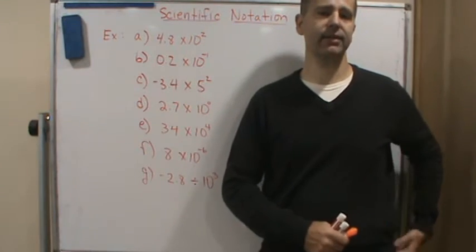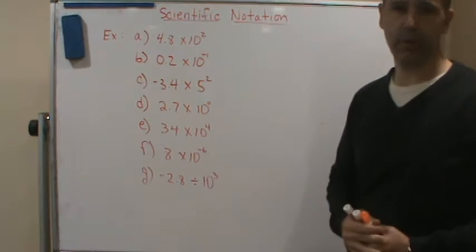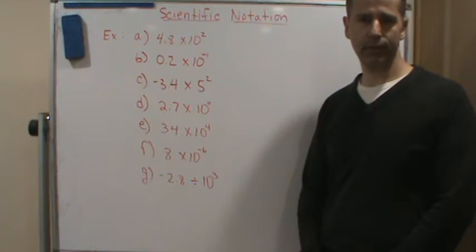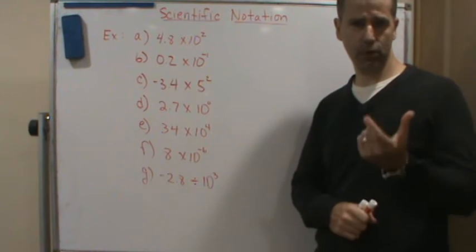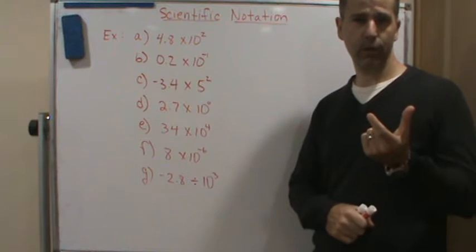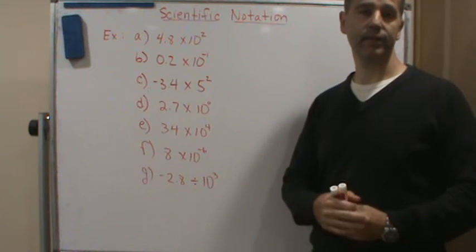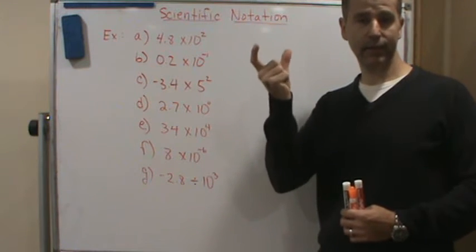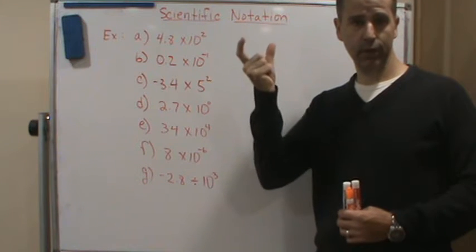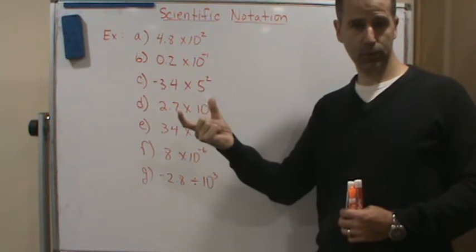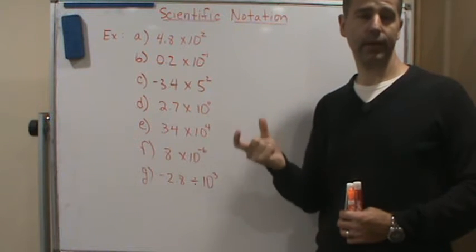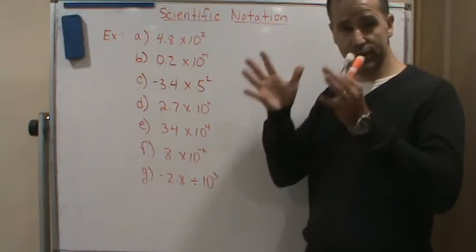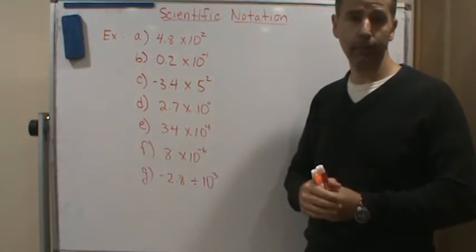Welcome back. In this video we're going to do an example of deciding whether a given number is in scientific notation or not. Remember, all we're looking for is: is the first piece a number between one and ten, and is the second piece a power of ten? It's a product — we're writing any number as a product of two numbers. The first part is between one and ten, the second part is a power of ten. That's it.